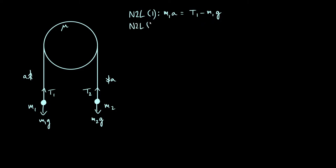And if we do the same thing for particle 2 or mass 2, we get mass times acceleration m2a is m2g minus t2.